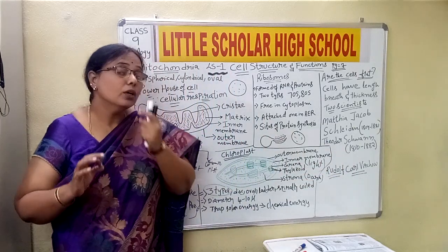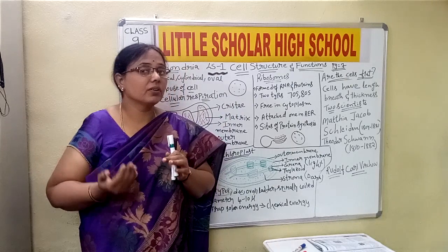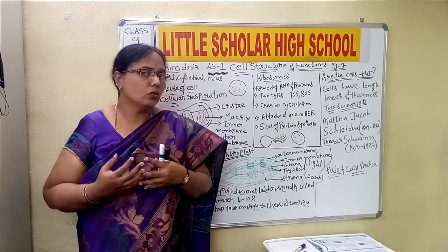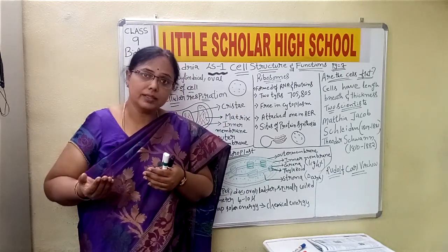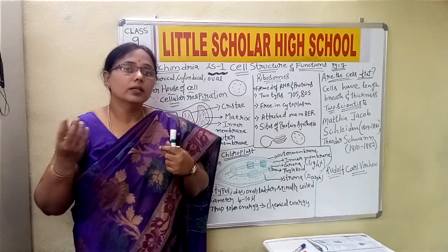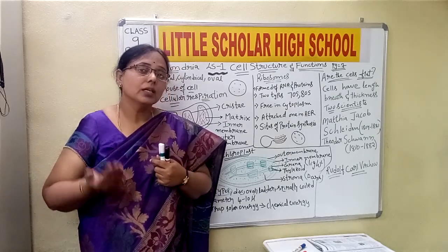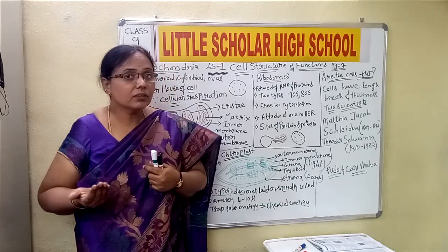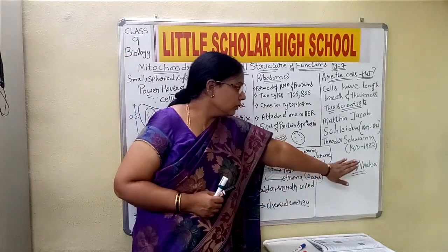The next scientist is Rudolf Carl Virchow, who said that new cells arise from pre-existing cells. If any damage occurs and needs to be repaired, new cells must arise. This concept — that all new cells arise from pre-existing cells — was given by Rudolf Carl Virchow.